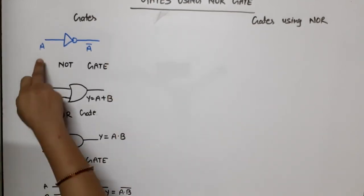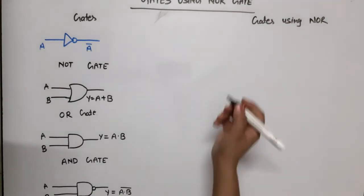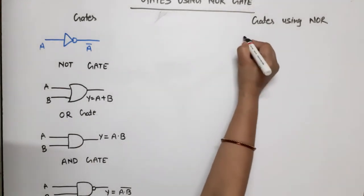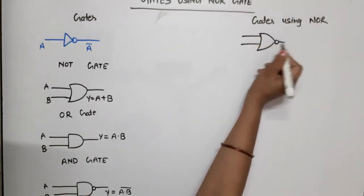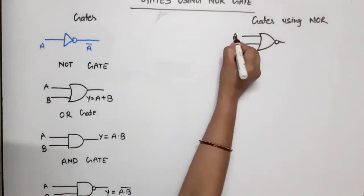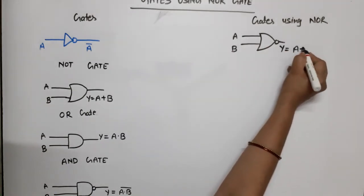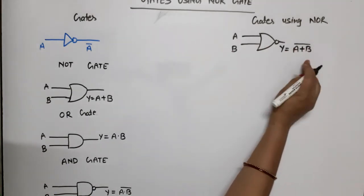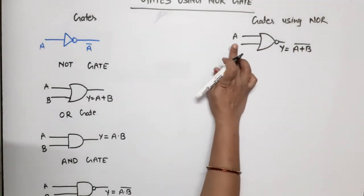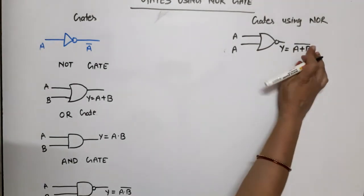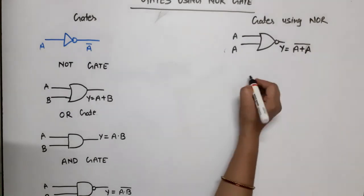This is the symbol of NOT gate: if input is A, output is A bar. NOR gate has two inputs A and B, and output Y is equal to A plus B bar. If we replace B by A, then output becomes A plus A bar.